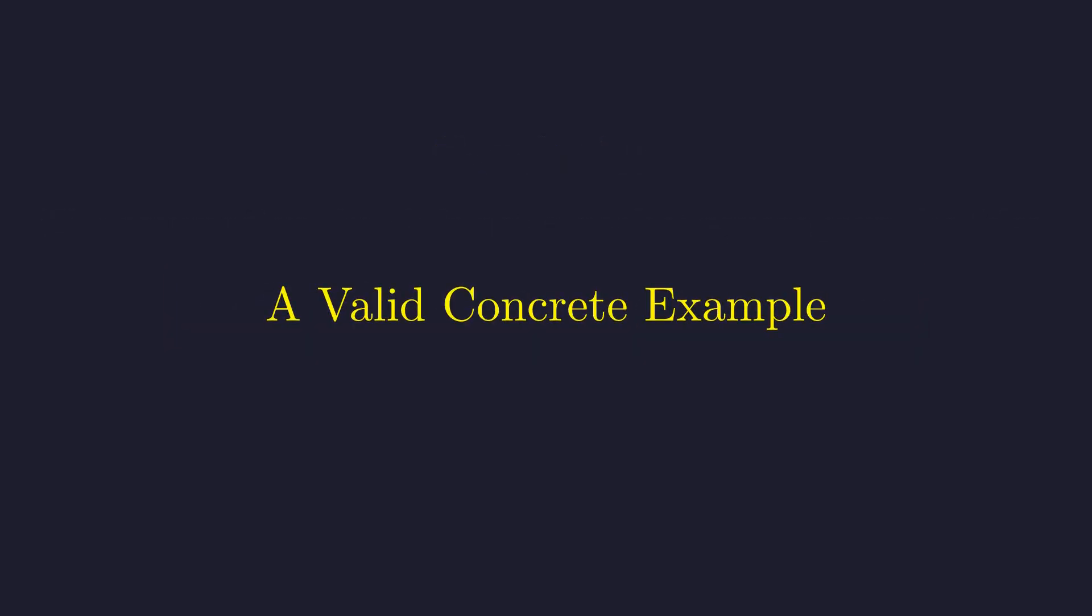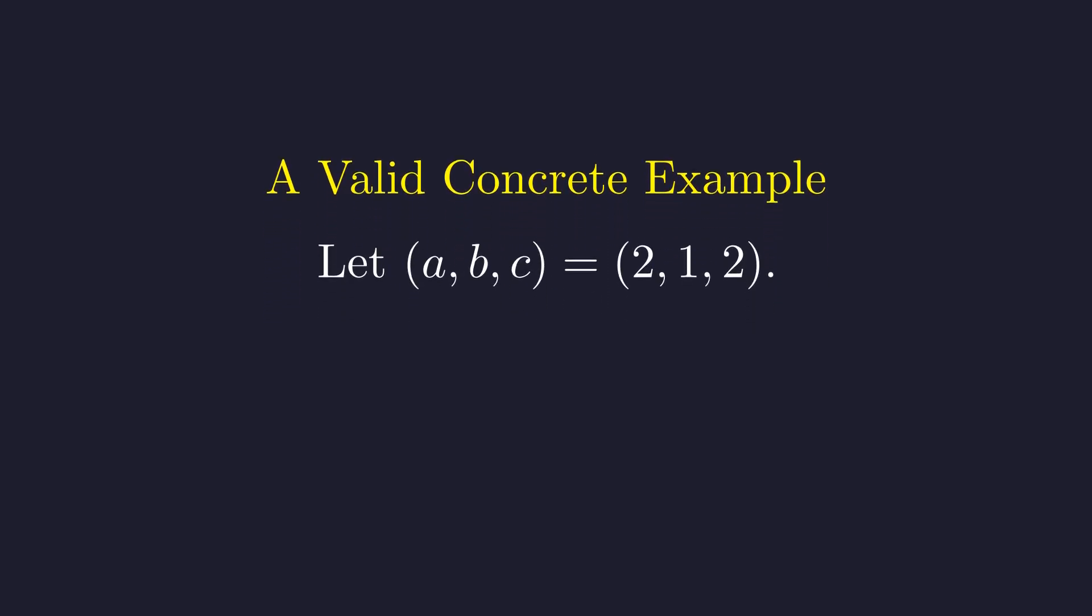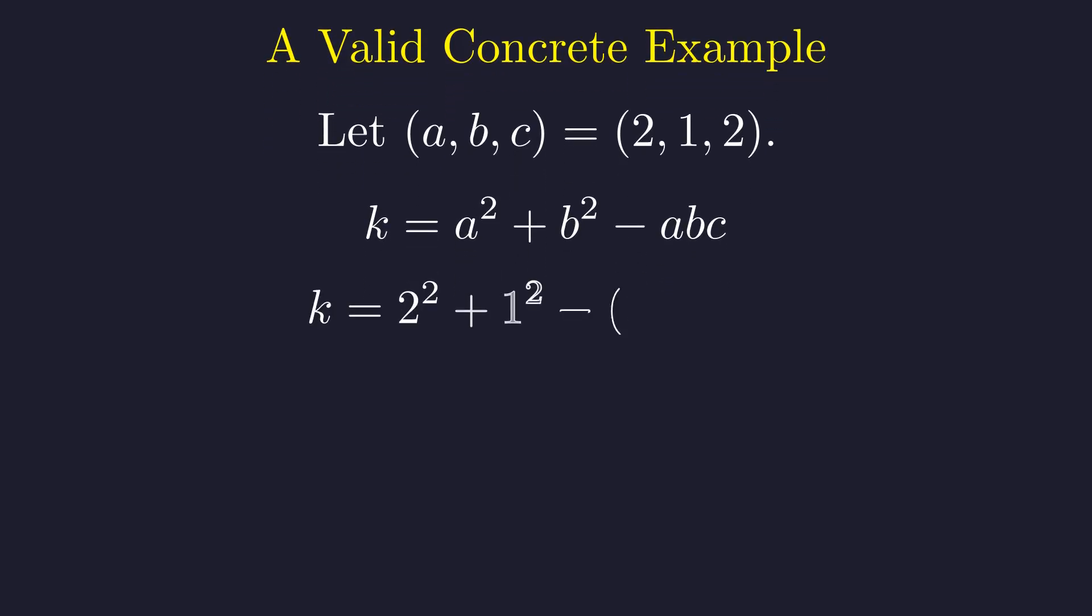Let's see this theorem in action with a concrete example that satisfies our constraint. Consider the triple where a is 2, b is 1, and c is 2. Let's calculate k for this triple. First, we substitute in the values. Next, we evaluate the squares. Then we evaluate the product. We perform the addition and the subtraction. We find k equals 1.